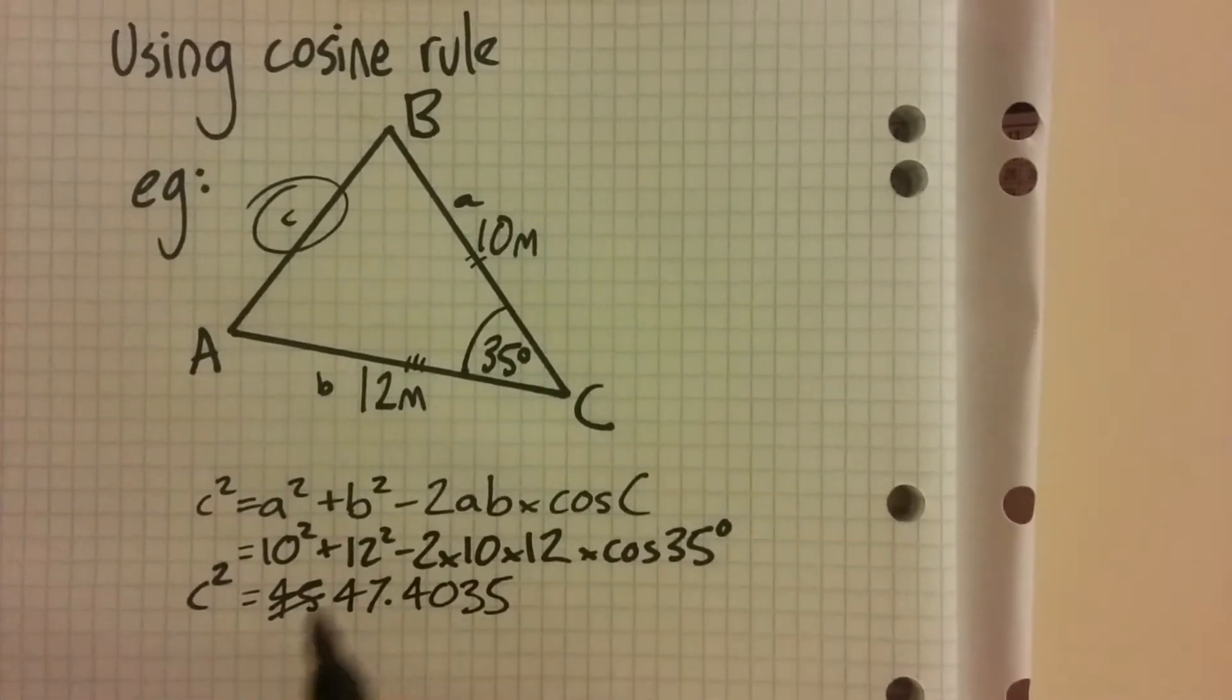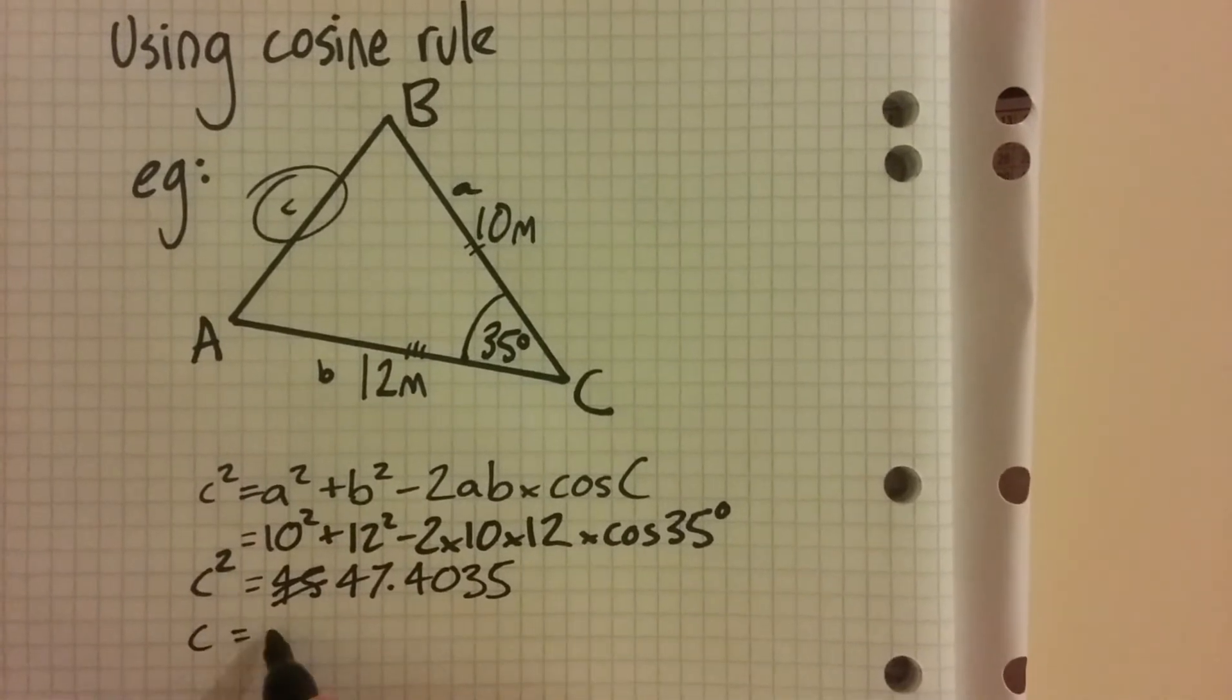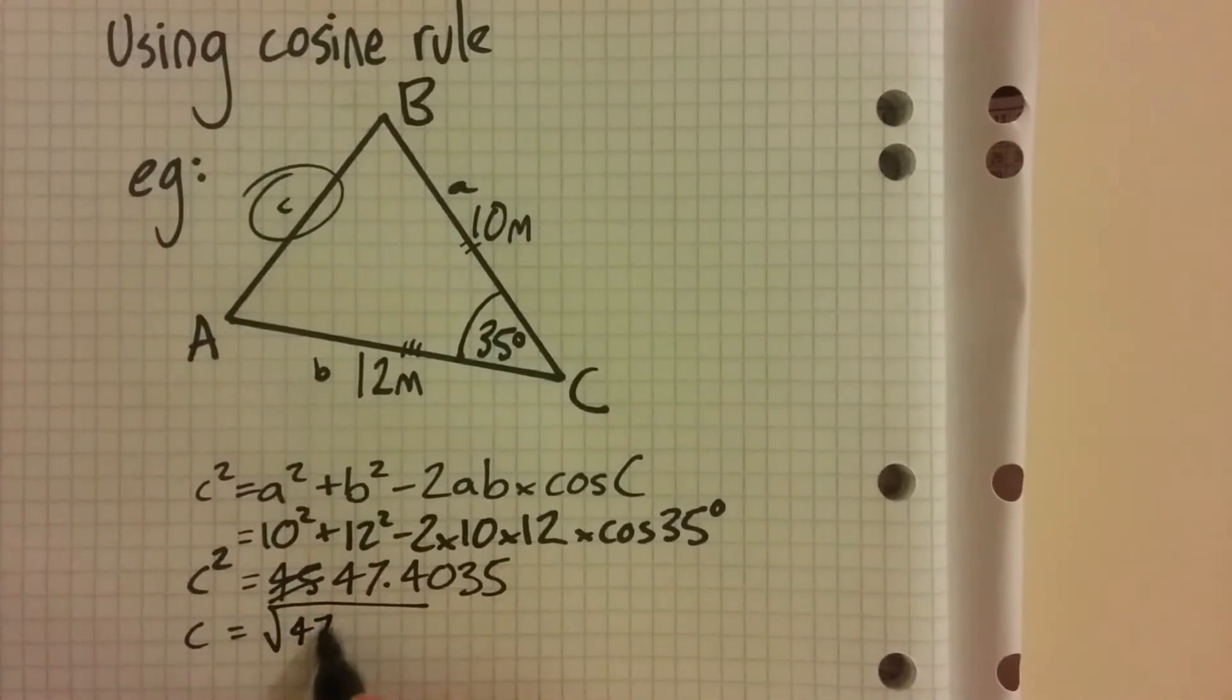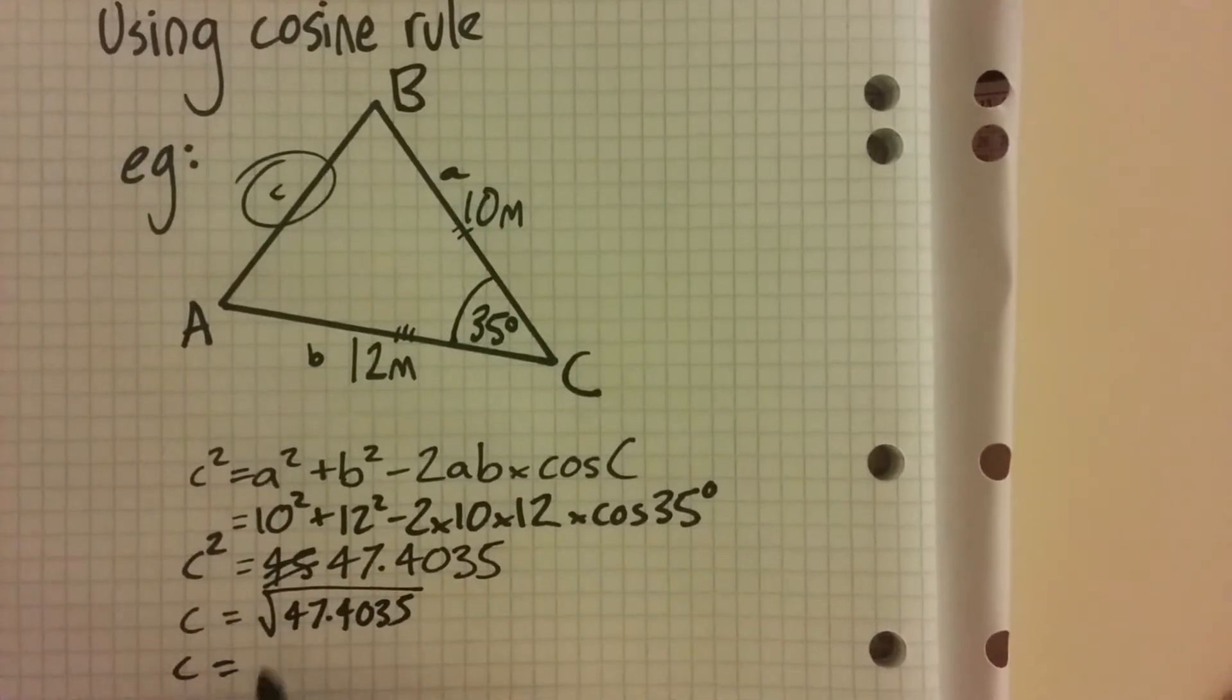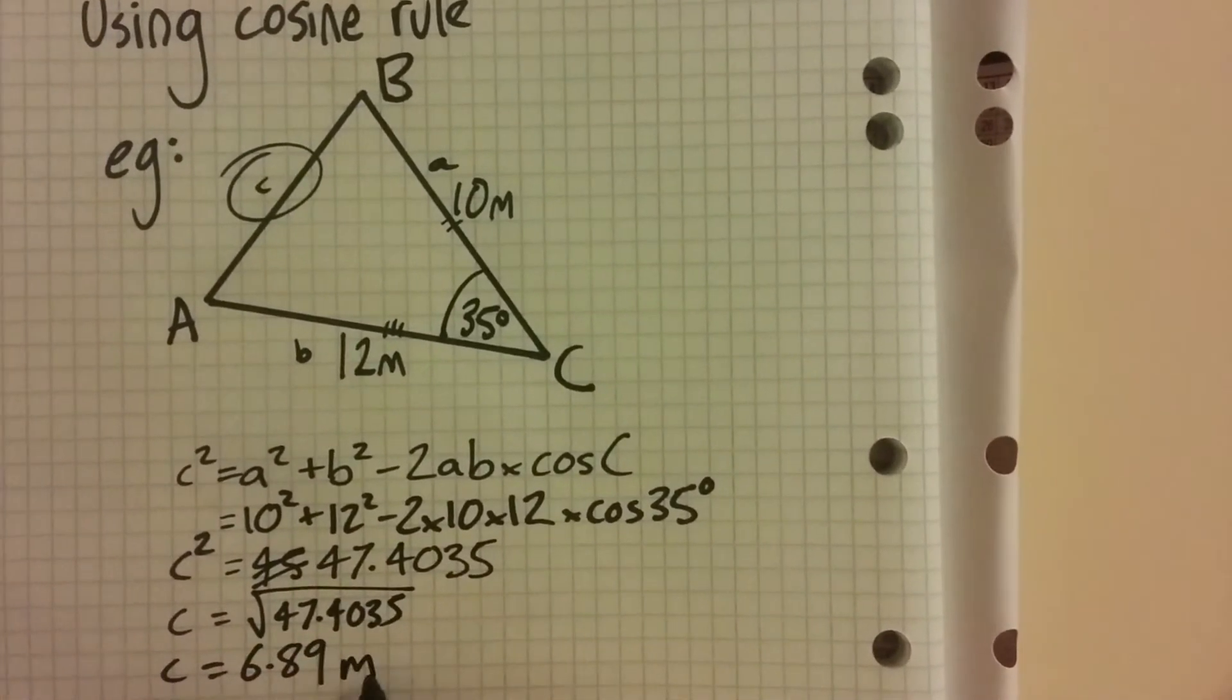Now that's c squared. To get c, we find the square root. And c is 6.89 meters.